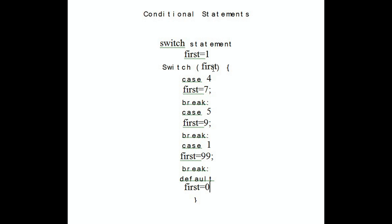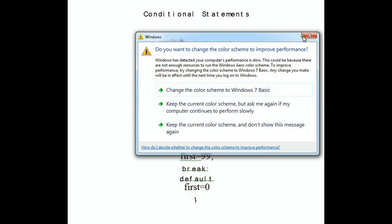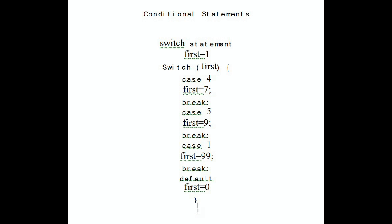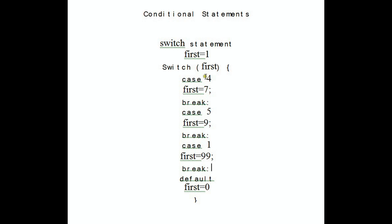Basically, the switch statement checks the value of 'first', and these cases are the values we're checking for. We're telling the switch: if the value inside 'first' is equal to four, execute this, then stop the switch statement and carry on with the rest of the code. It goes through all the cases until it finds a match, executes the statement, then stops. If it doesn't match any case values, it goes straight to the default and executes that.